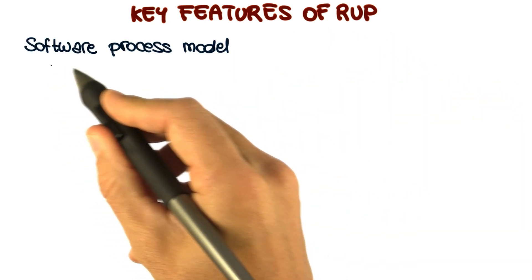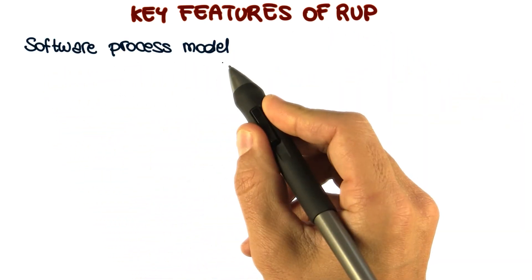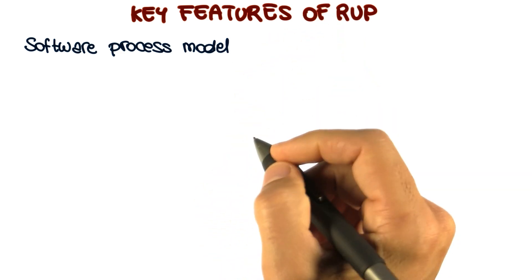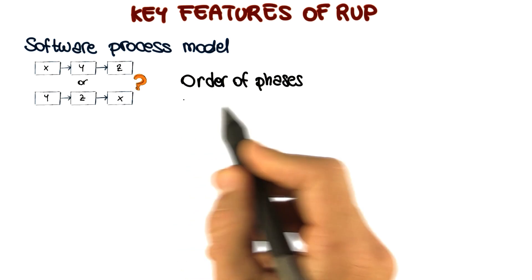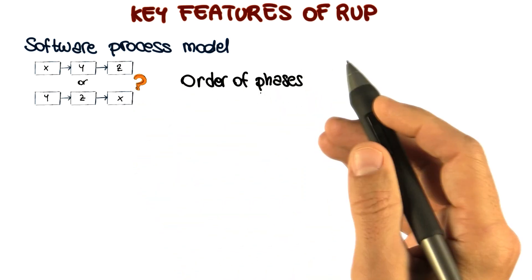First of all, the Rational Unified process is a software process model. So if you recall our introductory lessons, that means two main things. The first one is that it defines an order of phases that have to be followed in the software process.